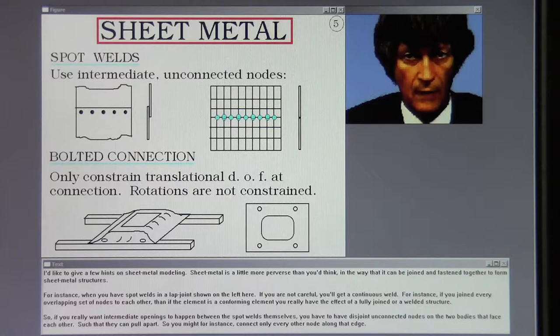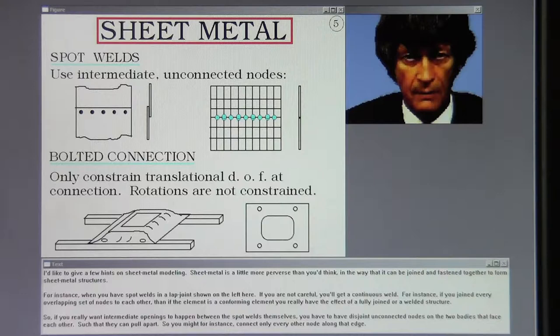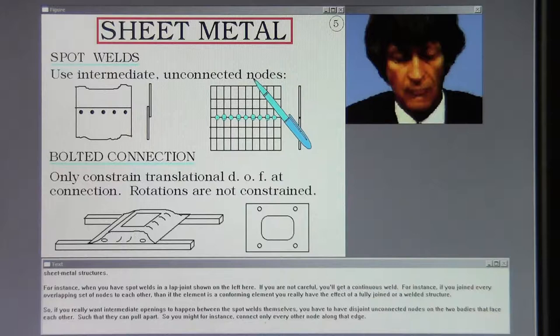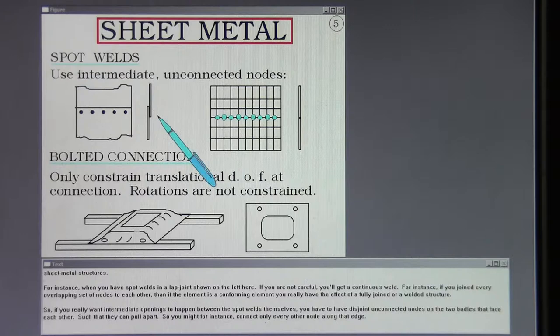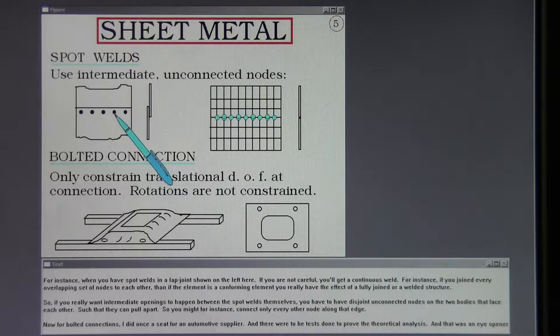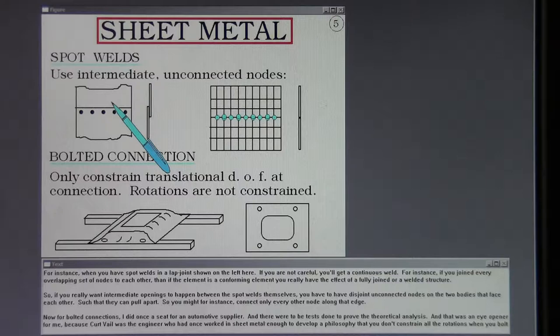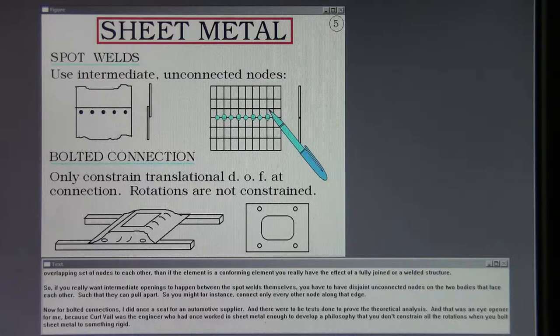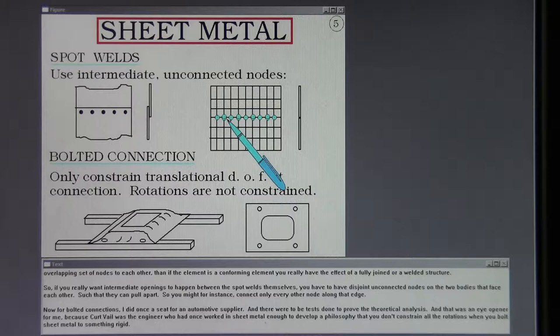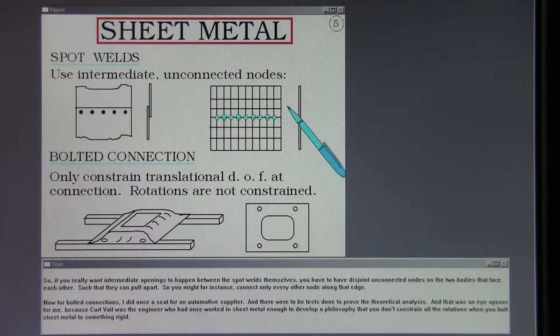I'd like to give a few hints on sheet metal modeling. Sheet metal is a little more perverse than you'd think, in the way that it can be joined and fastened together to form sheet metal structures. For instance, when you have spot welds in a lap joint, shown on the left here, if you are not careful, you'll get a continuous weld. For instance, if you join every overlapping set of nodes to each other, then if the element is a conforming element, you really have the effect of a fully joined or welded structure. So if you really want intermediate openings to happen between these spot welds themselves, you have to have disjoint unconnected nodes on the two bodies that face each other, such that they can pull apart. So you might, for instance, connect only every other node along that edge.